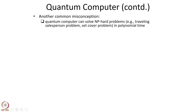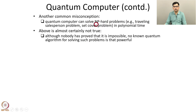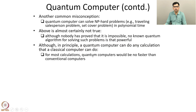Another common misconception is that a quantum computer can solve NP problems such as the traveling salesperson problem and the set cover problem in polynomial time. This is also almost certainly not true. Nobody has proved that it is impossible for a quantum computer to solve NP problems, but there is no known quantum algorithm for solving such problems which is that powerful. Although in principle a quantum computer can do any calculation that a classical computer can do, for most calculations quantum computers would be no faster than conventional computers.